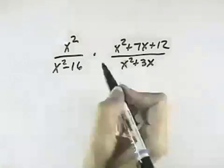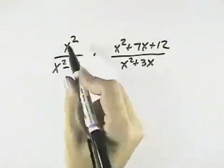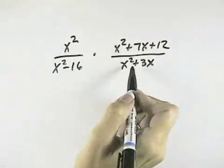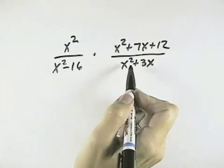We want to perform the indicated operation, which is multiplication. Before we do that, I'm going to factor all the numerators and denominators to see if we can simplify or cancel before we multiply.